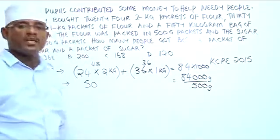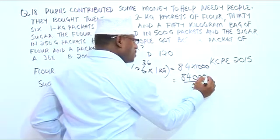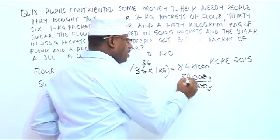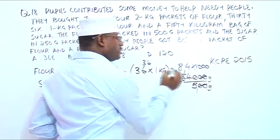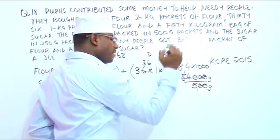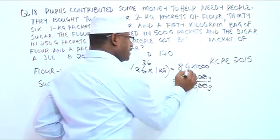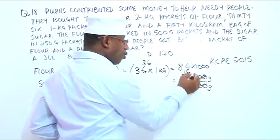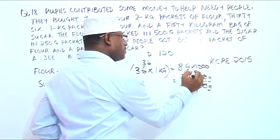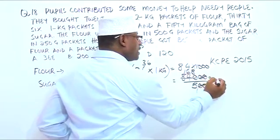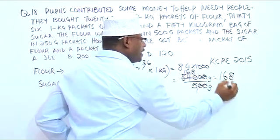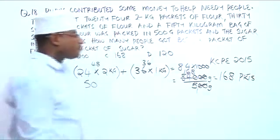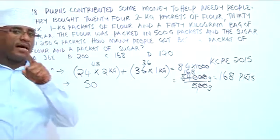So we divide 84,000 by 500. Cancelling two zeros, we get 840 divided by 5. 8 divided by 5 is 1 remainder 3; bring down 4 — 34 divided by 5 is 6, 6 times 5 is 30, remainder 4; bring down 0 — 40 divided by 5 is 8. So we are going to get 168 packets of flour.